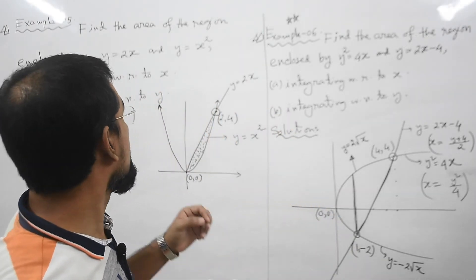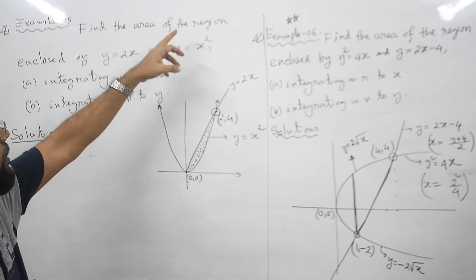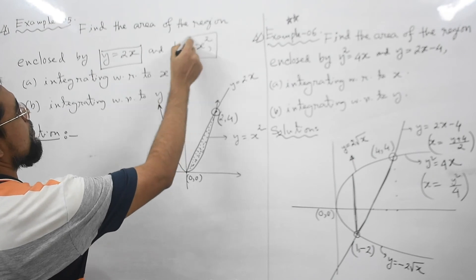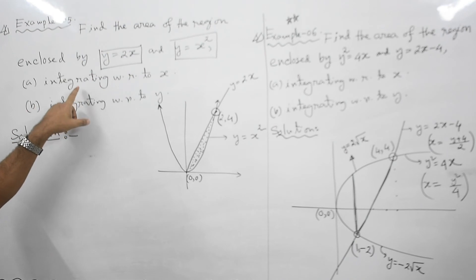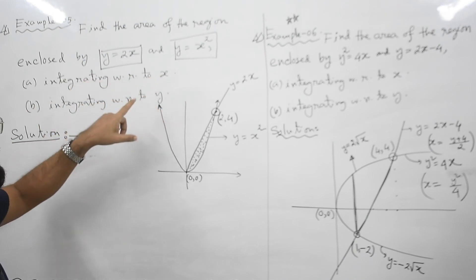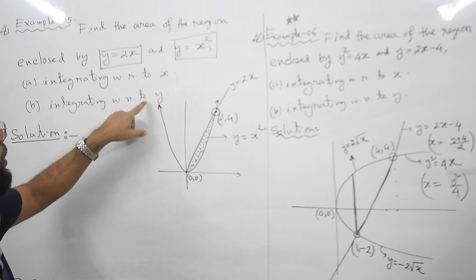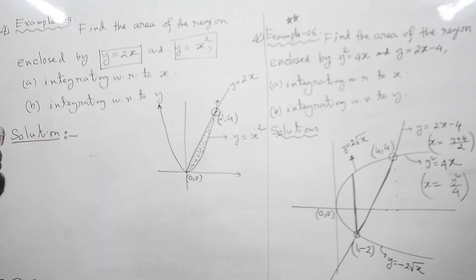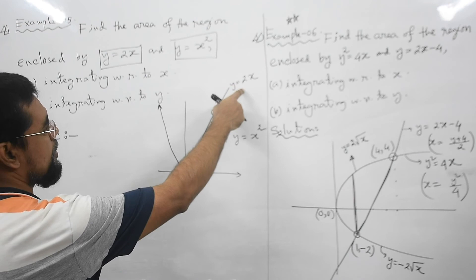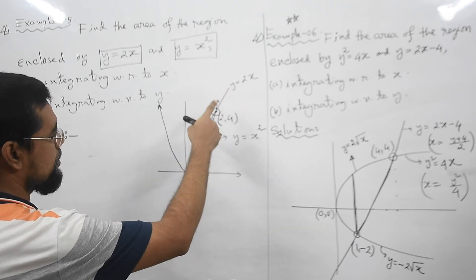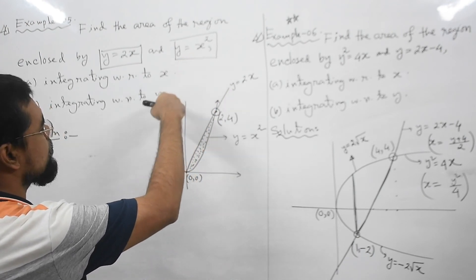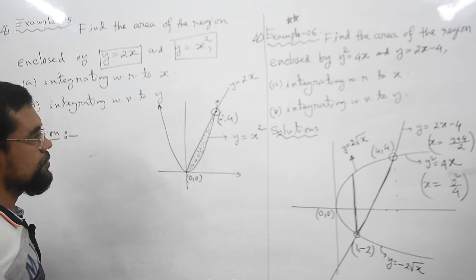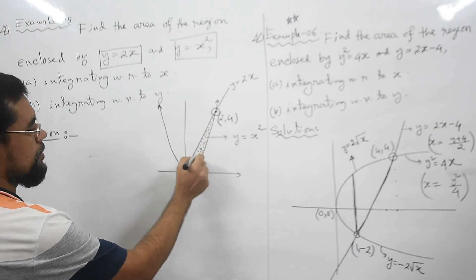Now let's try to understand Example 5. It says find the area of the region enclosed by two curves: y = 2x and y = x². We need to calculate this area using two formulas — first integrating with respect to x and second integrating with respect to y. Here y = 2x is a straight line through the origin with slope 2, and y = x² is an upward parabola with vertex at the origin. Both intersect at (0, 0) and (2, 4), and we need the area of this enclosed region.